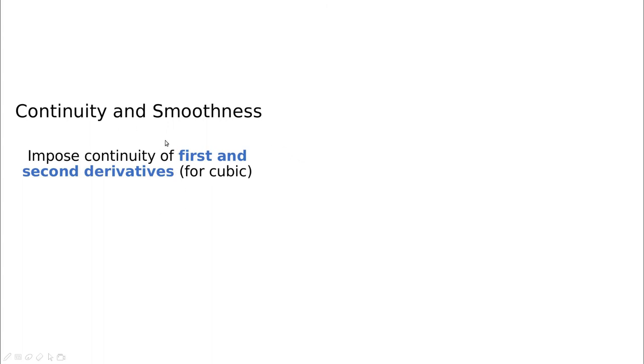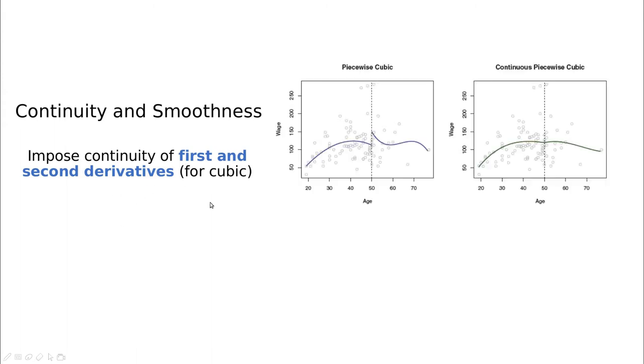In the case of cubic polynomials, if we match also the first and second derivative, we can have something more smoother. So instead of having discontinuity in the variable or discontinuity in the first derivative, we also have continuity above. And you can see this smoother function there.